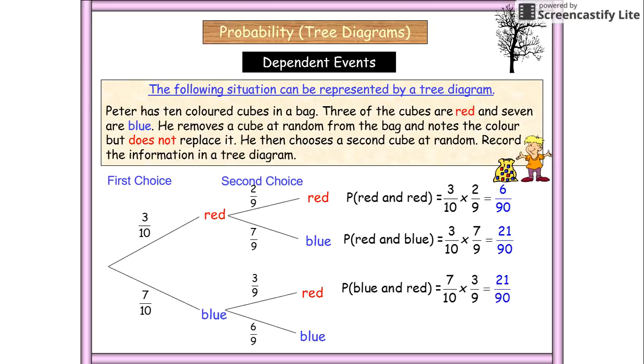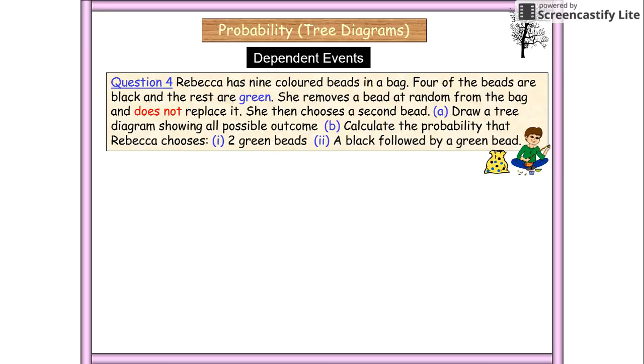We're going to have our blue-red, 21 over 90, and our blue-blue is 42 over 90. Okay, so this is what happens when you don't reduce it. Let's look at another one.